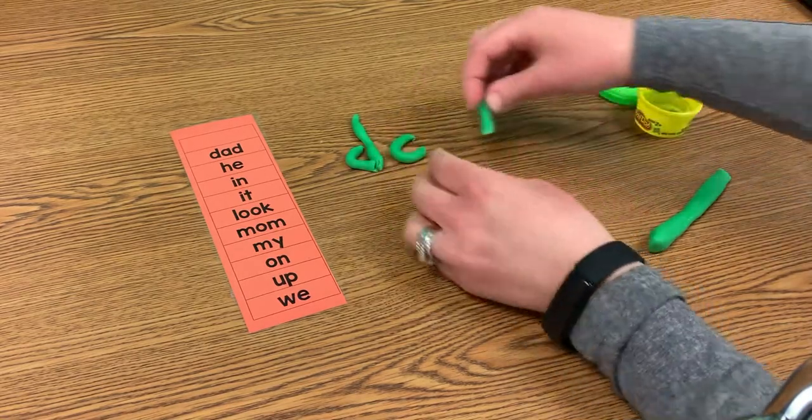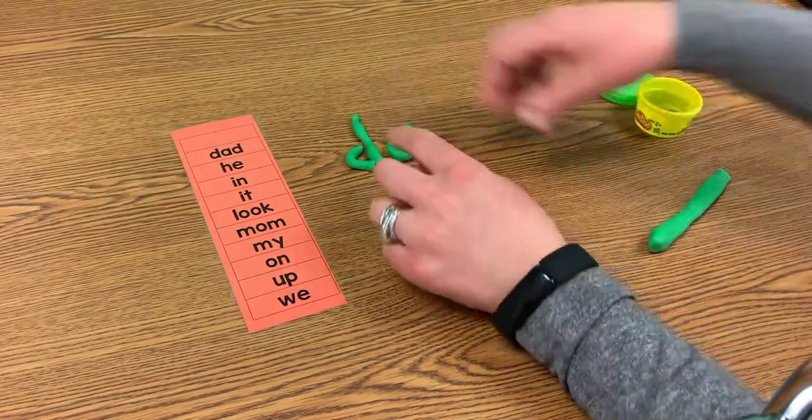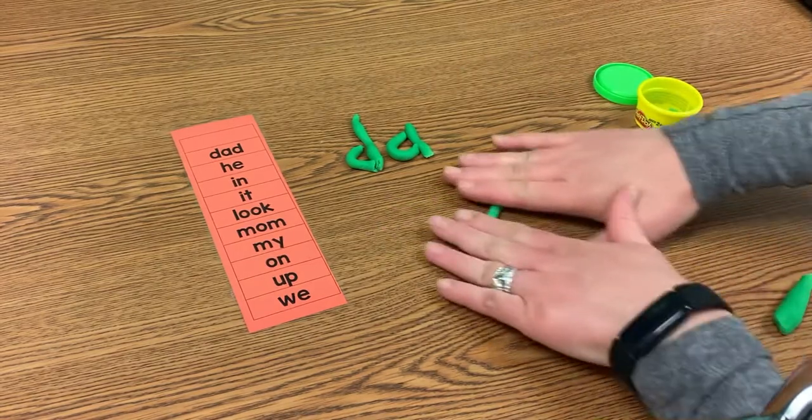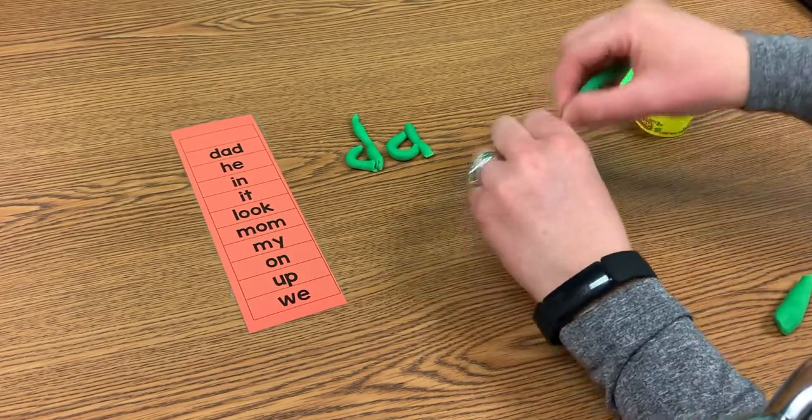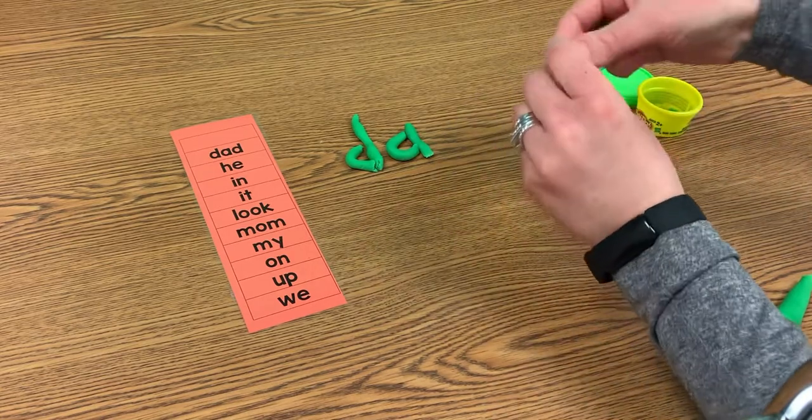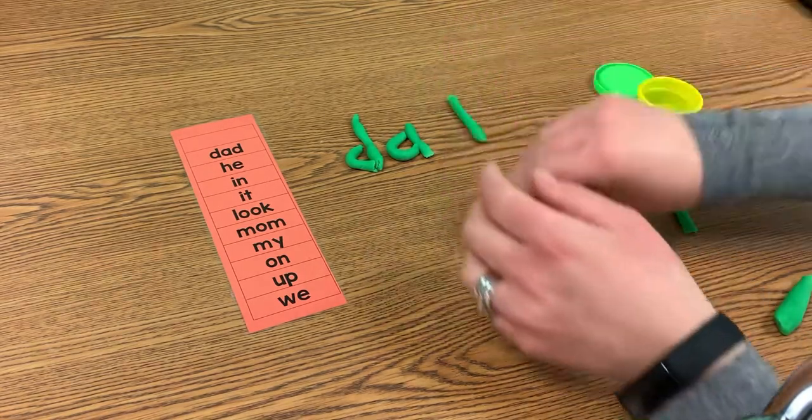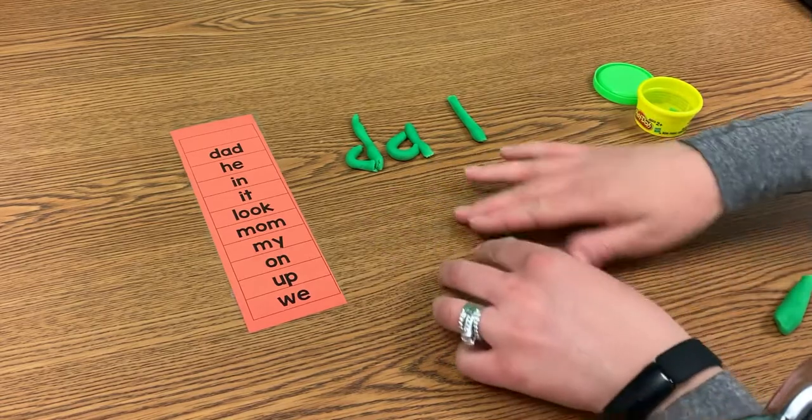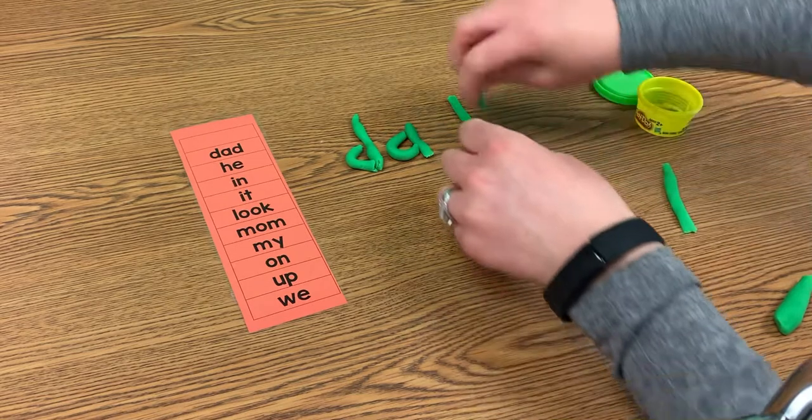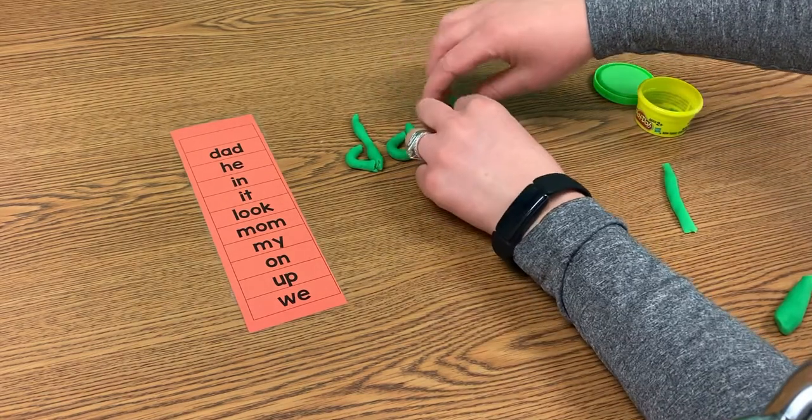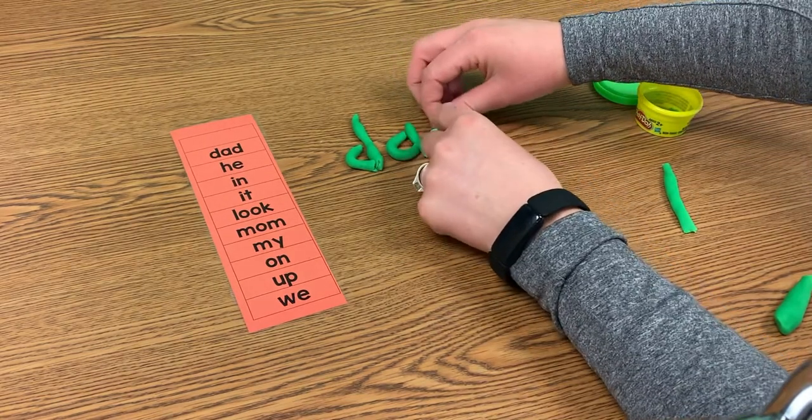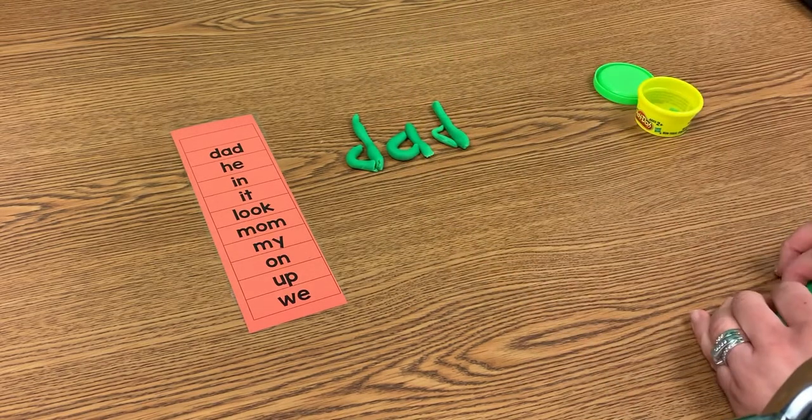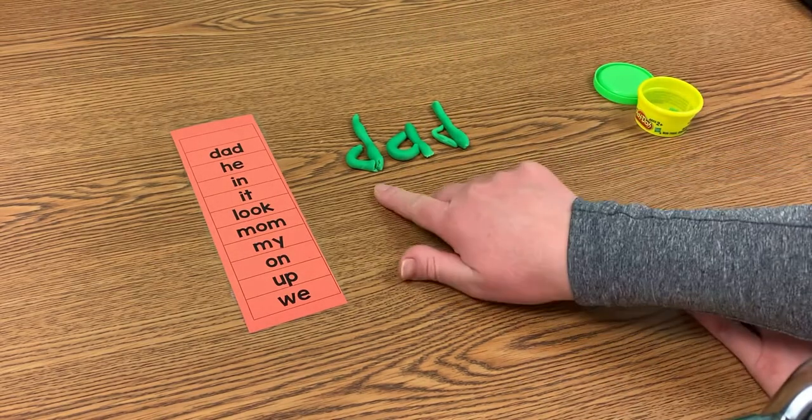I'm going to make the A and get a little bit more Play-Doh to make that last D. I'm going to build my letter D. I'm going to do the best that I can to make my Play-Doh look like the letters and words. So I built my word DAD.